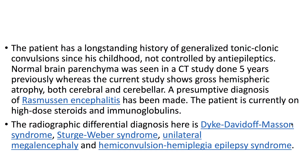The patient has a long-standing history of generalized tonic-clonic convulsions since childhood, not controlled by anti-epileptics. Normal brain parenchyma was seen in a CT study done 5 years previously, whereas the current study shows gross hemispheric atrophy, both cerebral and cerebellar. A presumptive diagnosis of Rasmussen's encephalitis has been made.